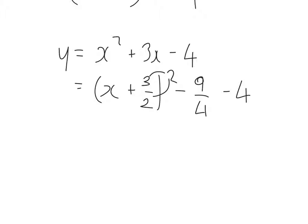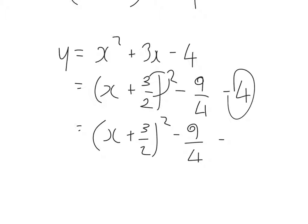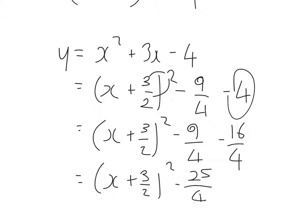And we need to take away 4. That'll be x plus 3 over 2, all squared, minus 9 over 4. If we think about 4 as 4 pieces, that would be 16 quarters, so that's a common denominator. Final answer: x plus 3 over 2, all squared, minus 25 over 4.